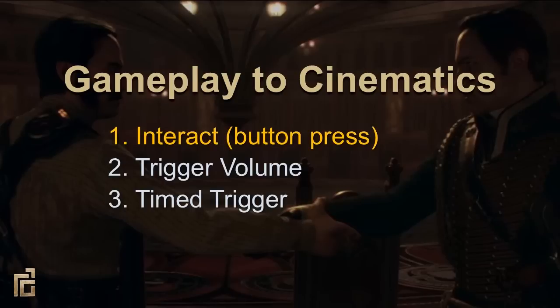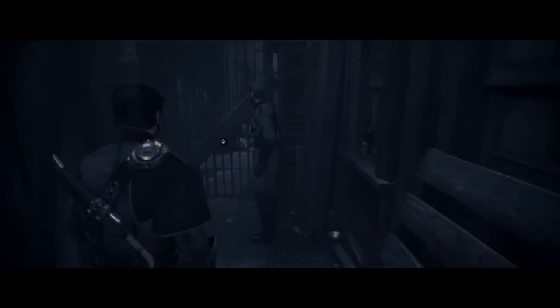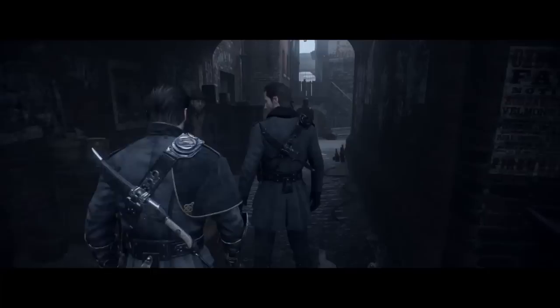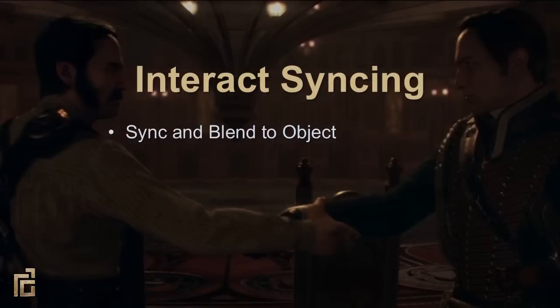So let's go over interacts. Interact syncing occurs when a screen prompt is activated by the player. On activation, the character is blended and then synced to an object. Blending is the procedural animating of a character from one pose to another pose, where syncing is the process of translating and rotating the entire character to a specific location relative to the world. There are two major benefits of interact syncing. The first is that the player has control over when the cinematic is triggered. The second is that because the cinematic is triggered at a specific location, we know exactly where the player is. Typically we animate the character as close to the object as possible. If the player is too far from the starting location to just use syncing, we use AI to path them closer. This lets our designers adjust the activation radius without animators having to go back and adjust the animation or the sync and blend times.